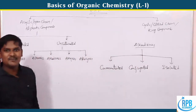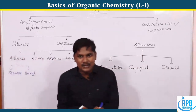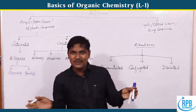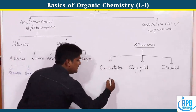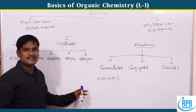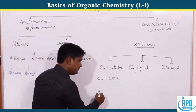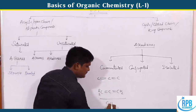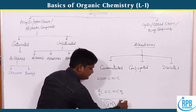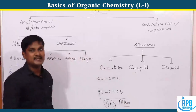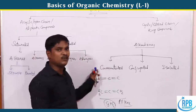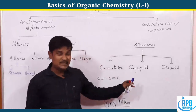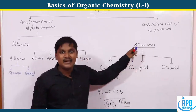Cumulated compounds have two double bonds on the same carbon. The best example is allene — CH2=C=CH2, with the formula C3H4. Allenes are the best examples of cumulated double bonds.